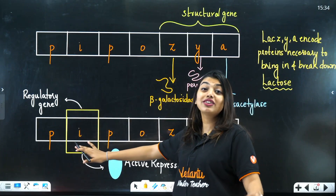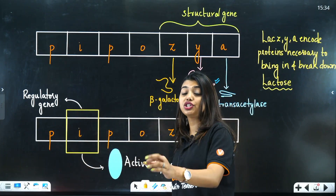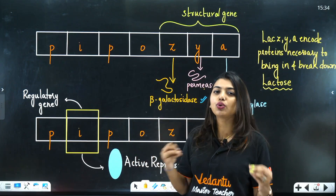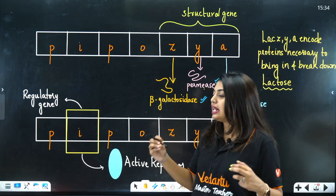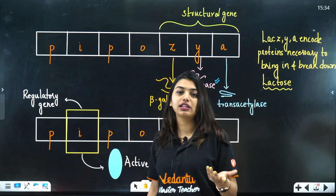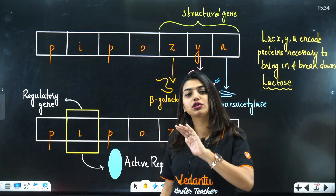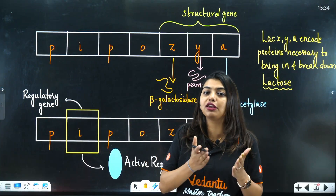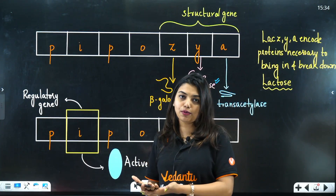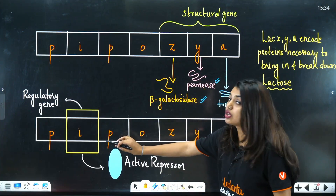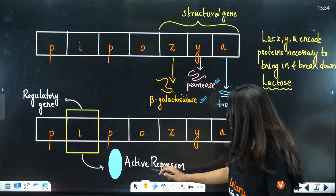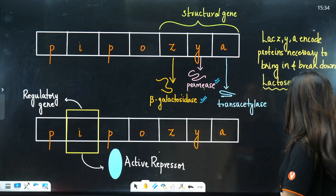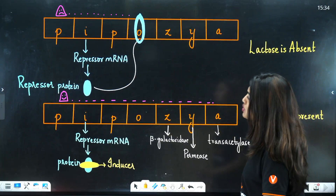The main controlling element is the regulatory gene — from the name itself you understand it regulates things. This regulatory gene is a housekeeping gene, meaning it is always switched on, continuously forming repressor mRNA and repressor protein. So the lac I gene continuously produces an active repressor protein.